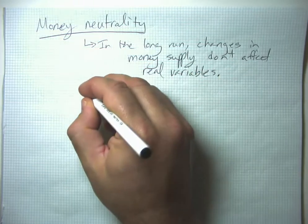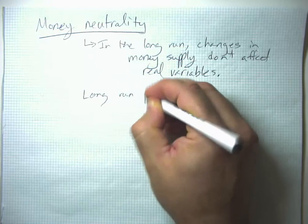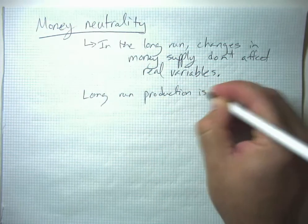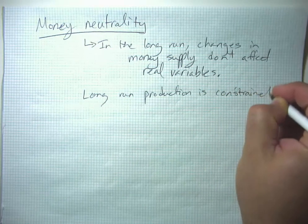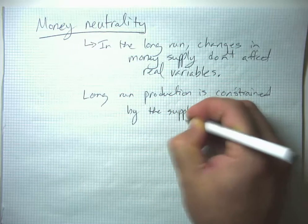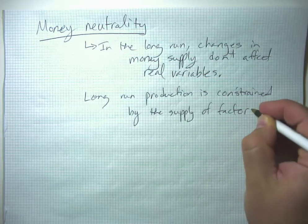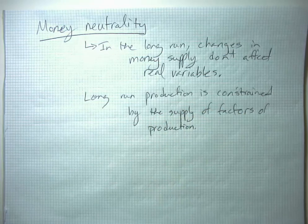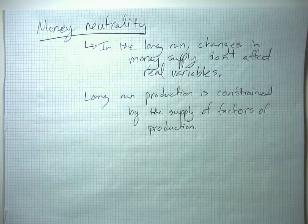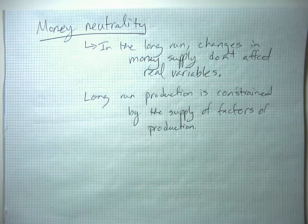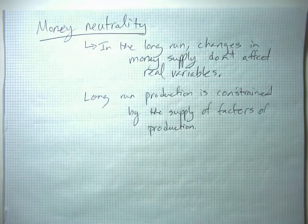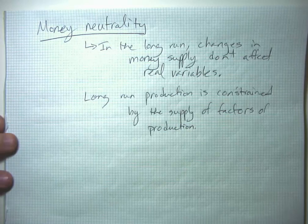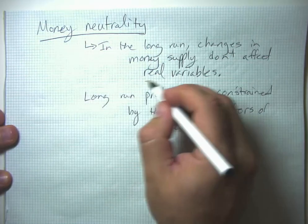In the long run, production is constrained by the supply of the factors of production — land, labor, capital, et cetera. If we print lots of money, we can't summon up more factories, make land more fertile, or instantly give people an education just by printing money. We might engage in some government spending using that money, but that's a different question about investment. The money supply change itself, we think, does not have real long-run effects.